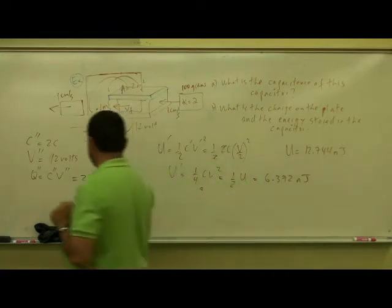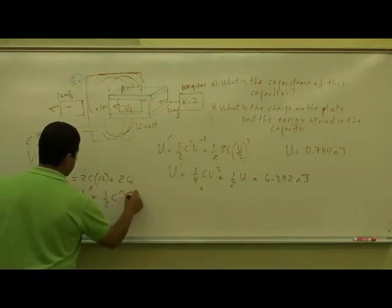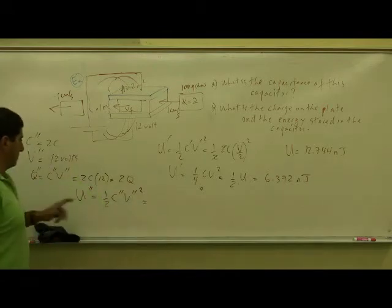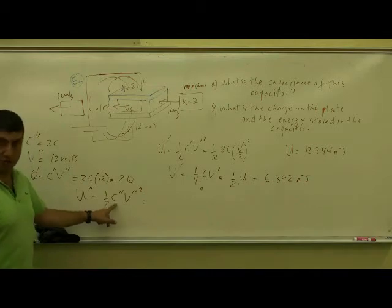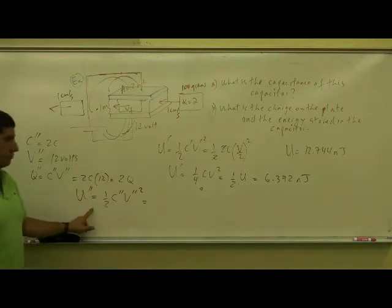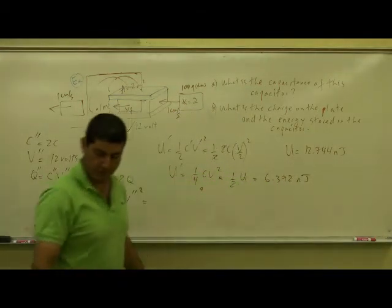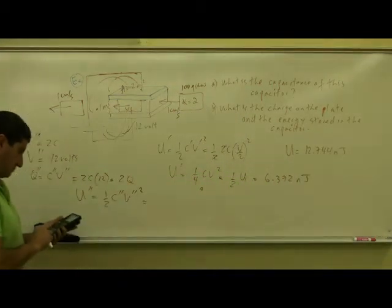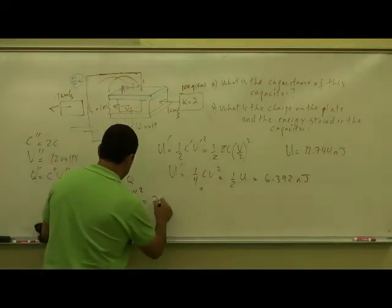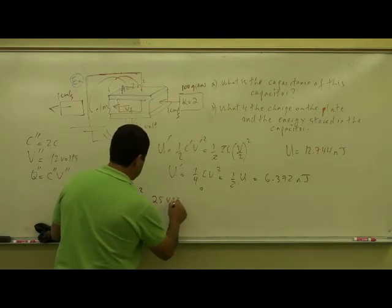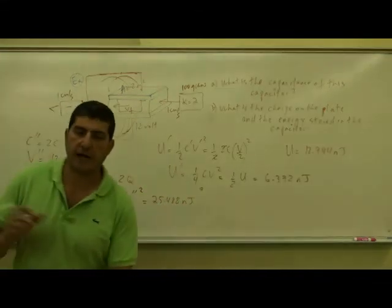So what happens to the energy now? U double prime is half C double prime, V double prime squared. The voltage has stayed the same. The capacitance has doubled. So the energy doubles. So it's basically two times 12.744, which is 25.488 nanojoules.